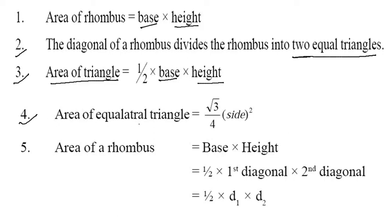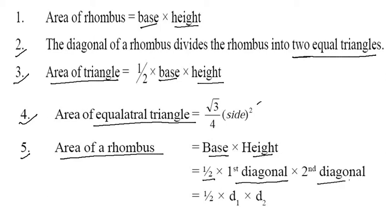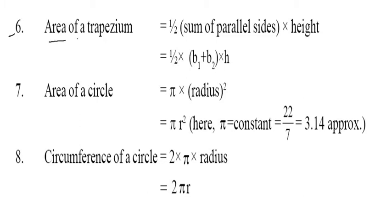Fourth, the area of equilateral triangle is under root 3 by 4 side square. Fifth, the area of rhombus is base into height, or you can say 1/2 D1 into D2 — that is, first diagonal into second diagonal. Sixth, the area of trapezium is 1/2 into sum of the parallel sides into height, written as 1/2 into (B1 + B2) into height, where height means the distance between the parallel sides.